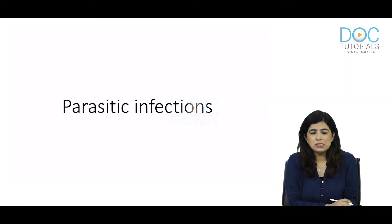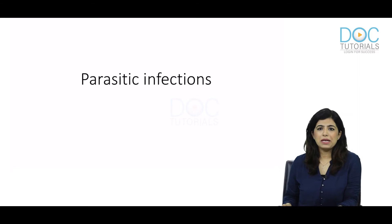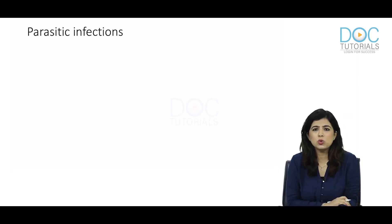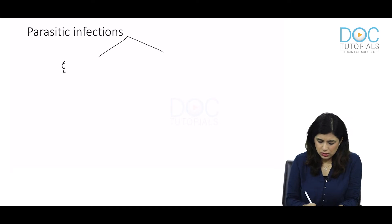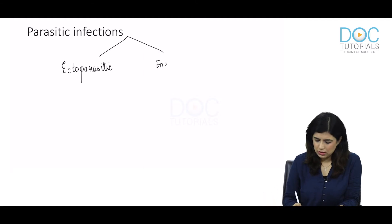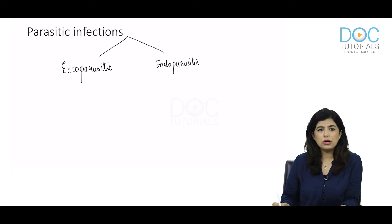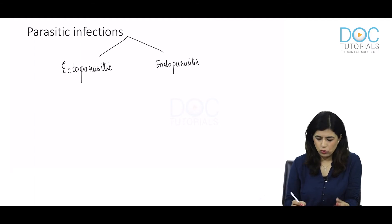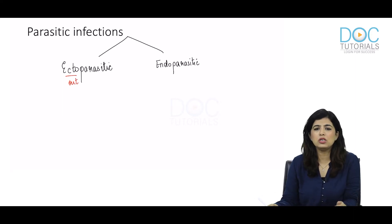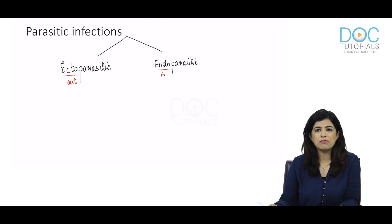Welcome to this lecture on parasitic infections. When we talk about parasitic infections, we divide them into two types: ectoparasitic infections and endoparasitic infections. The name itself suggests what they mean. Ecto means outside, so the parasites live on the human body. Endo means inside, so these parasites stay inside the human body.